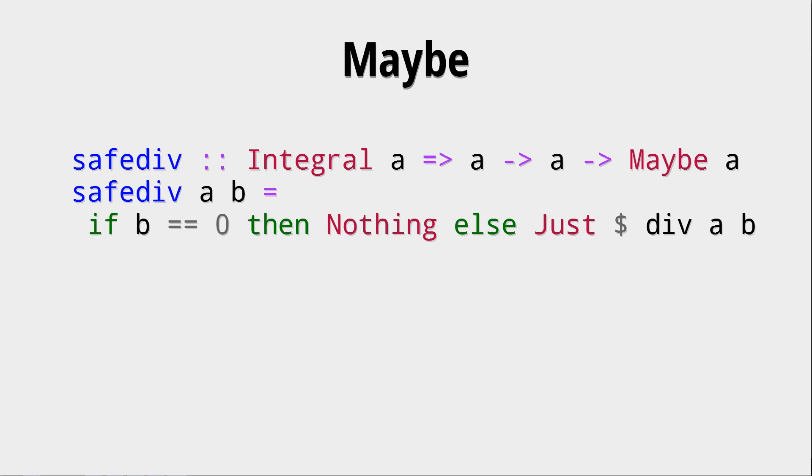There is this div function for integral types, and it will throw an exception if we divide by zero. So we can create the safe div function, which checks if we want to divide by zero. In this case, we return Nothing, and otherwise we return the Just of that division result. As we can see here, a valid division returns the value in this Just constructor, and a division by zero returns Nothing.